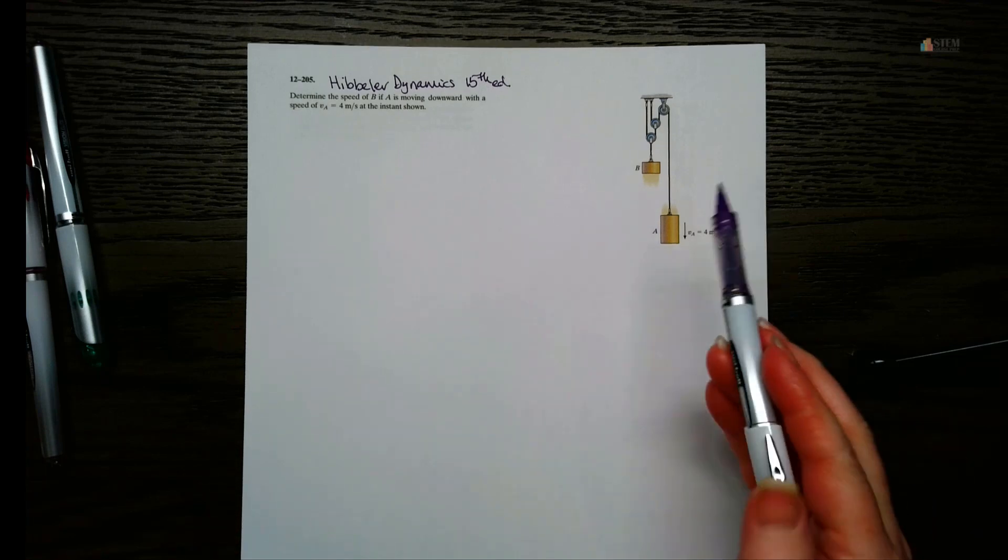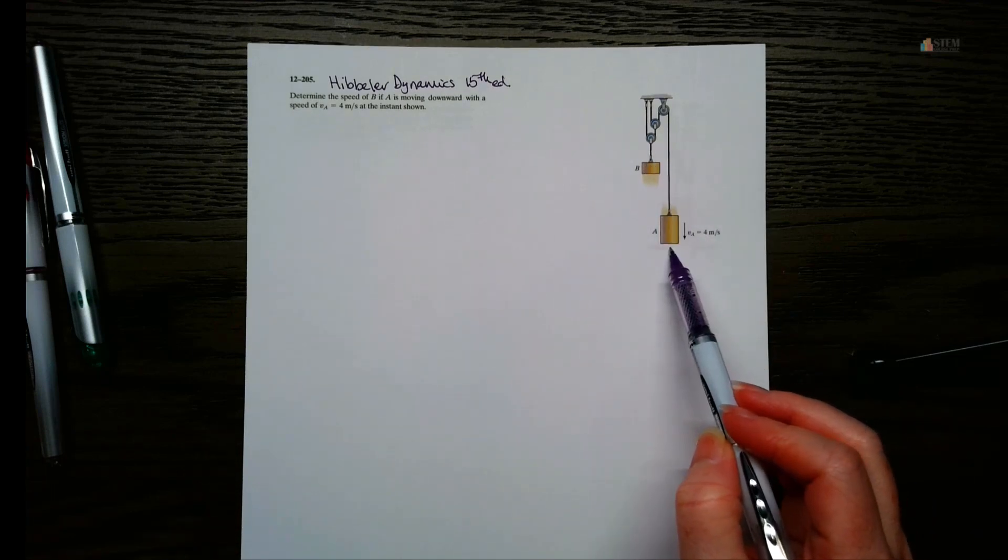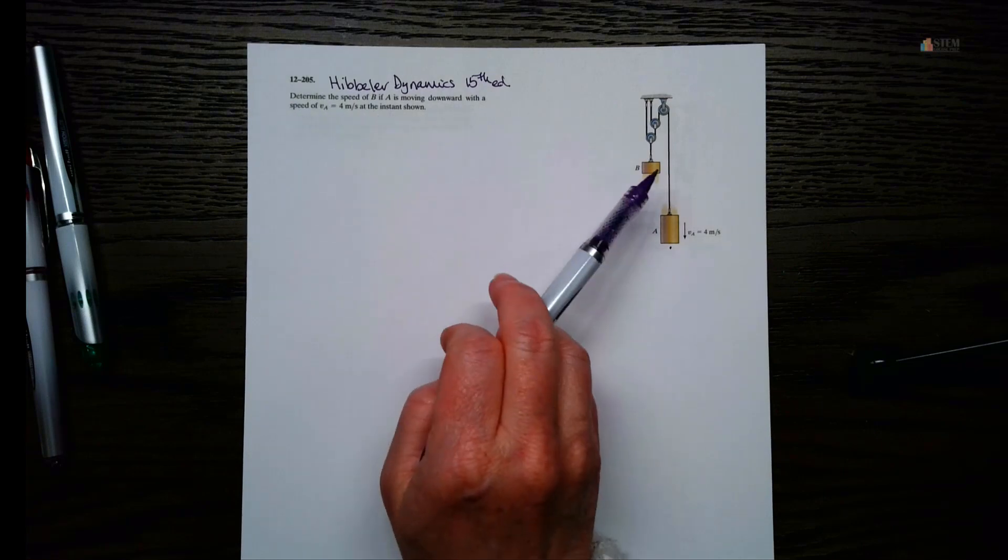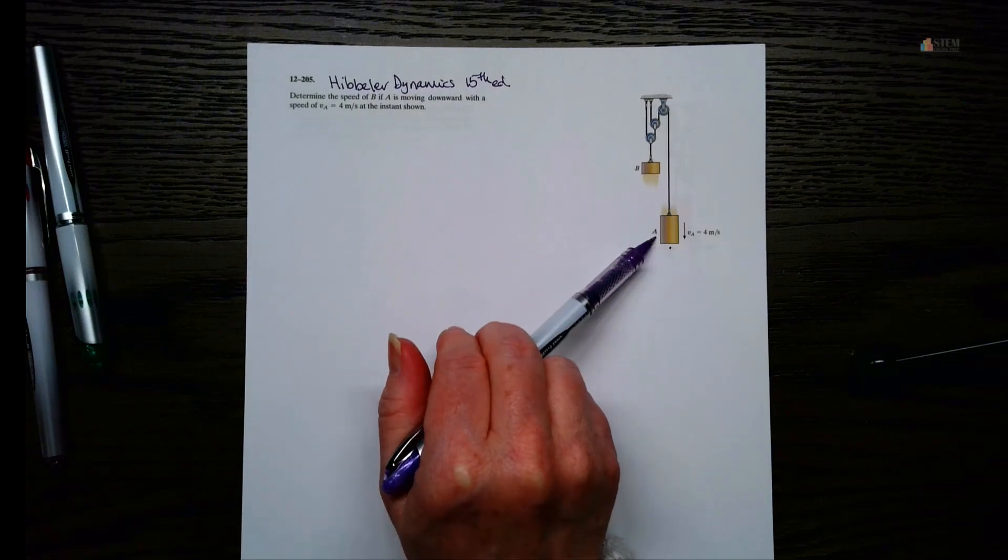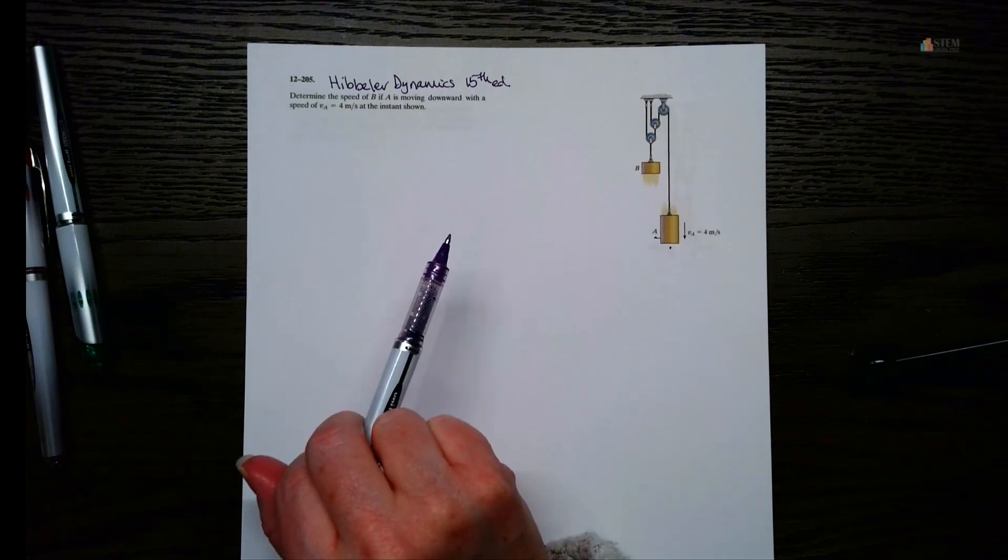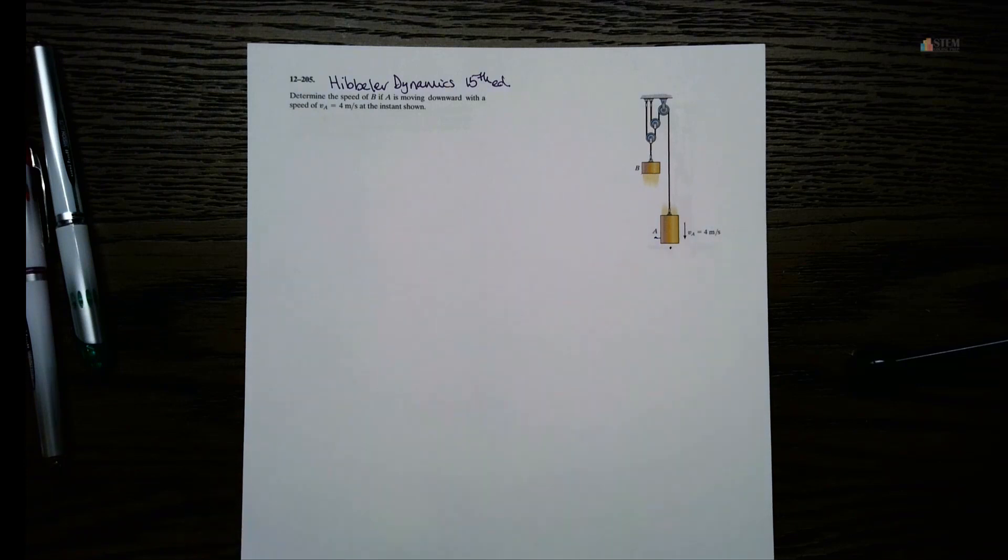So let's look at this one. We've got two cylinders here, and it says we want to find the speed of cylinder B if A is moving downward with a speed of 4 meters per second at this instant shown.